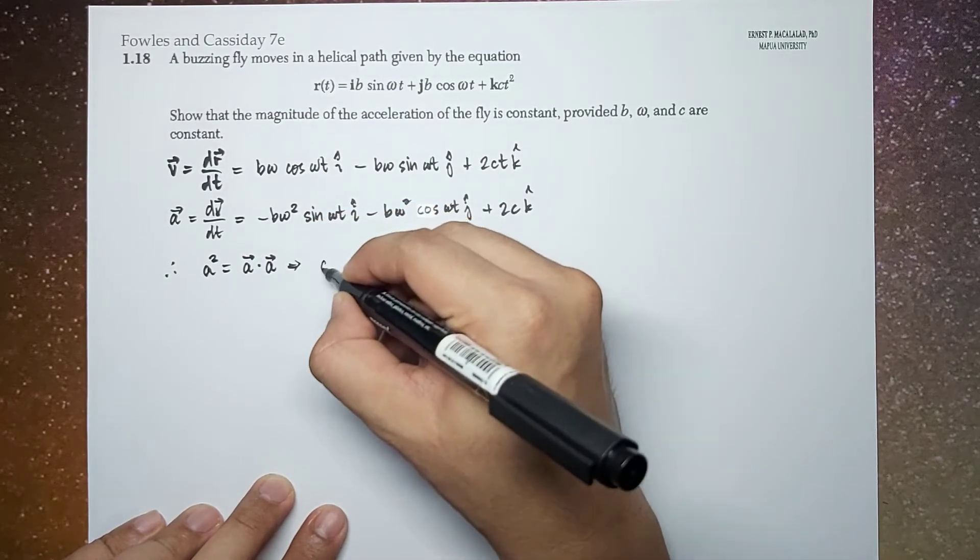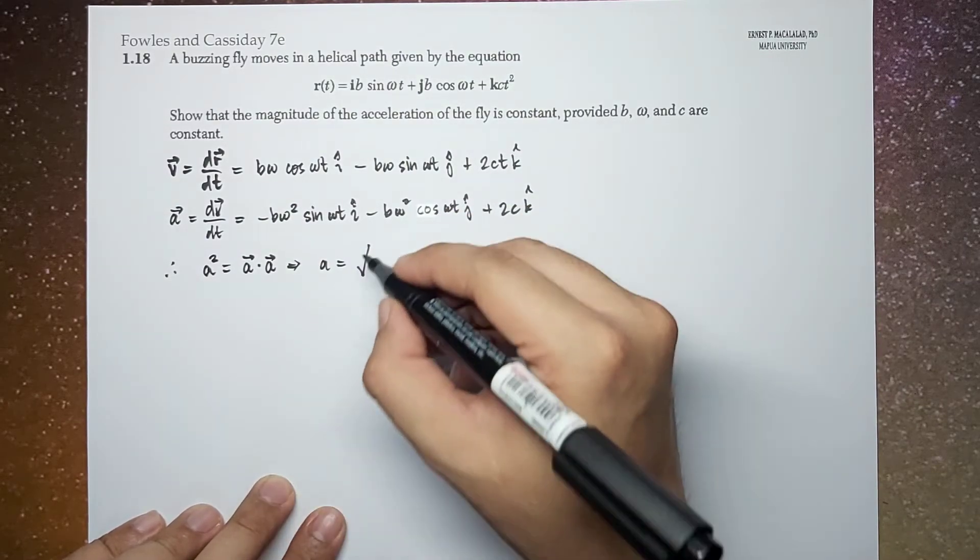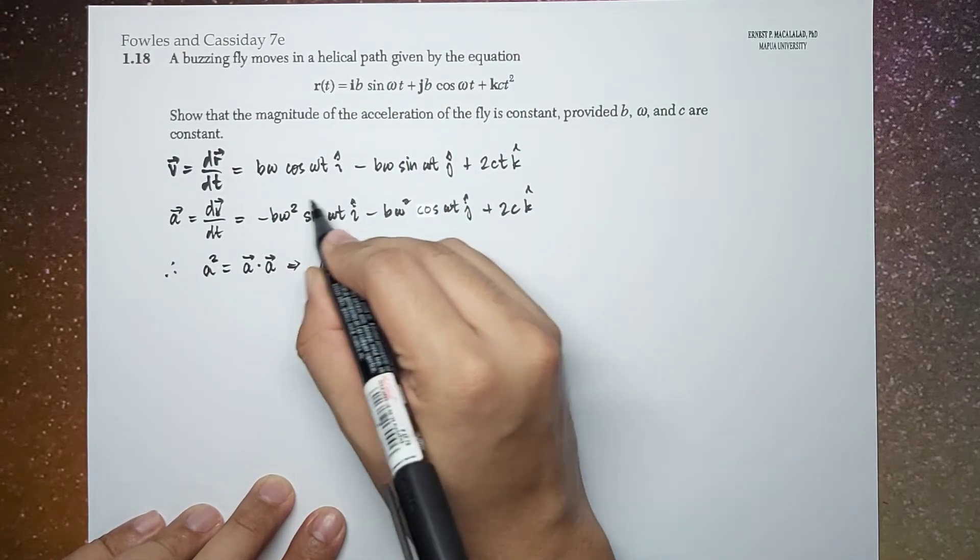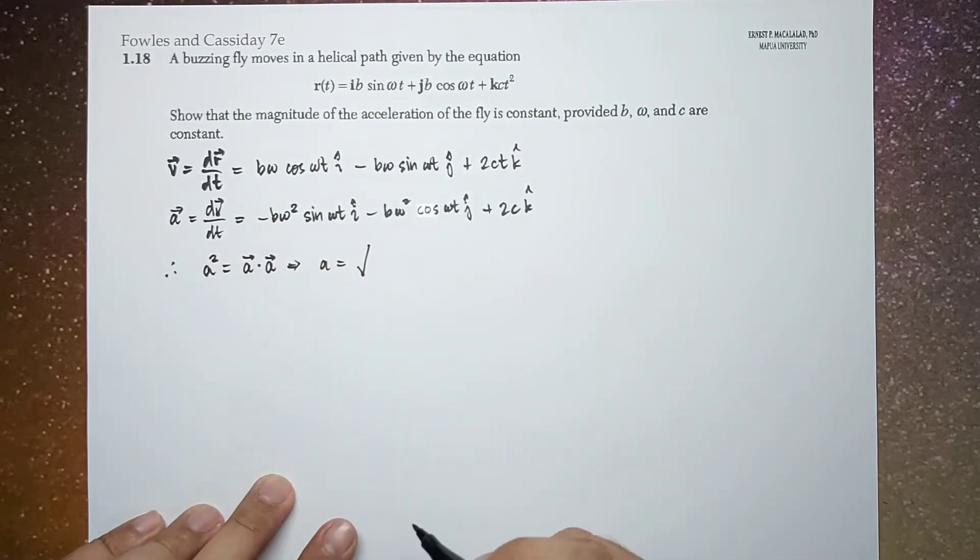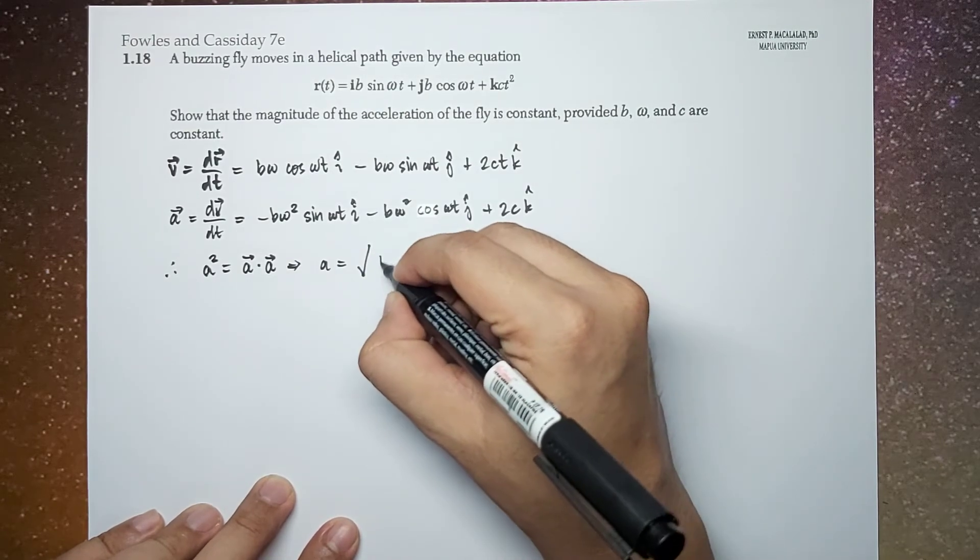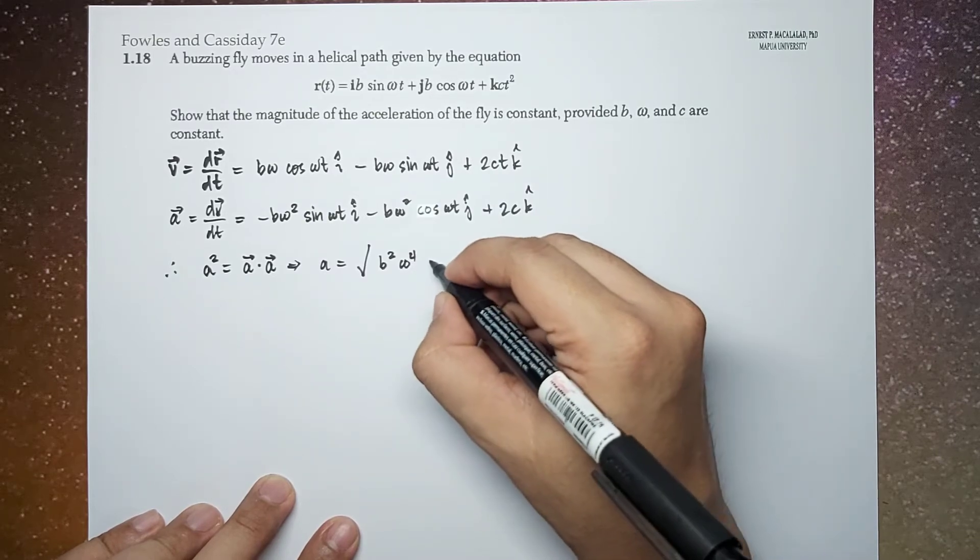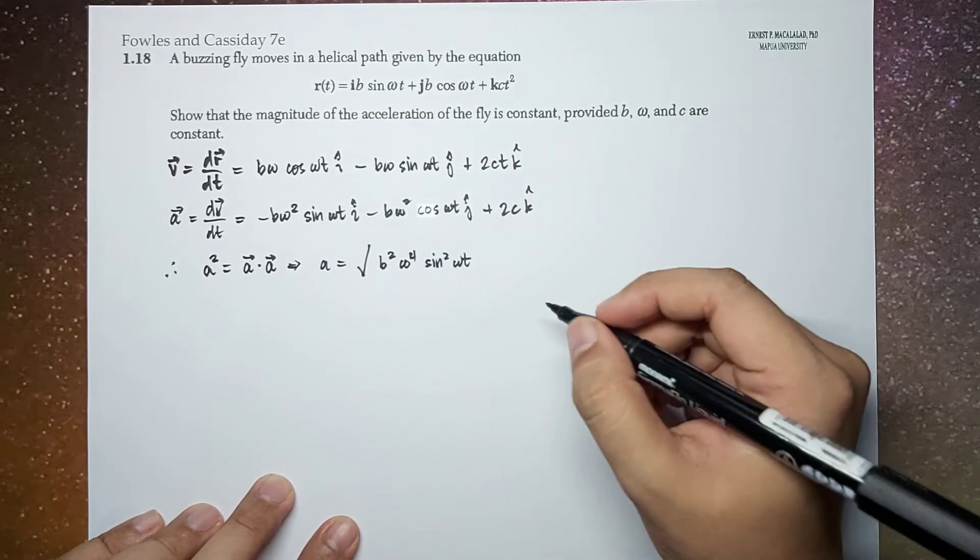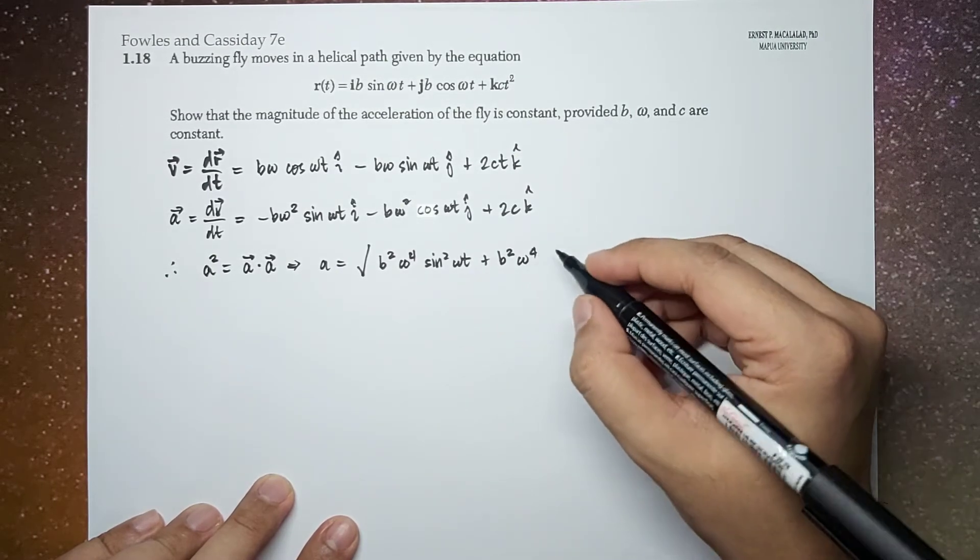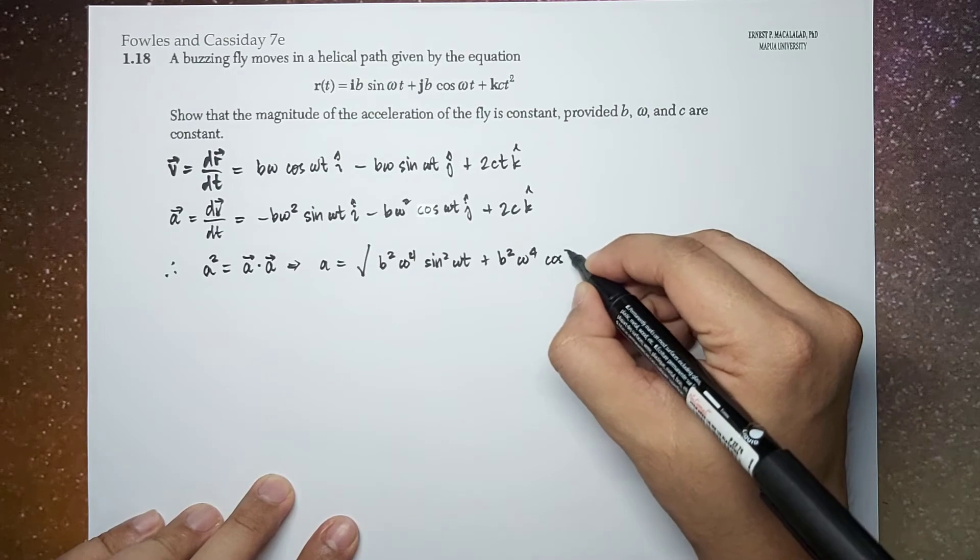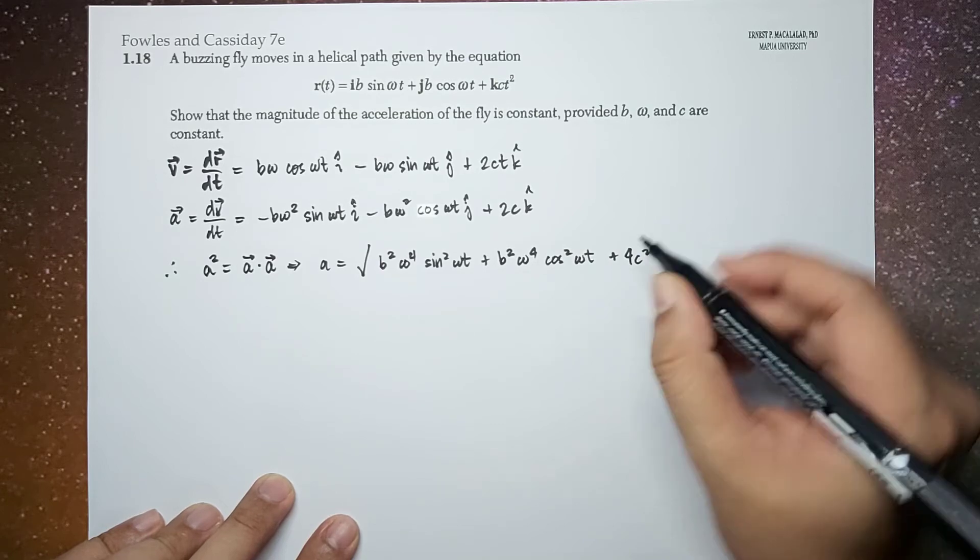So this means that the acceleration will now be equal to the square root of the square of the x, y, and z components of your acceleration vector. So this becomes b squared omega to the 4th sine squared omega t plus b squared omega to the 4th cosine squared omega t plus 4 c squared.